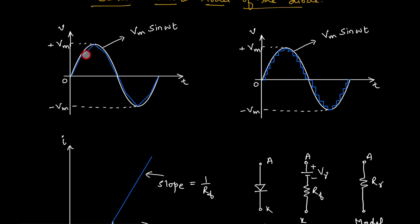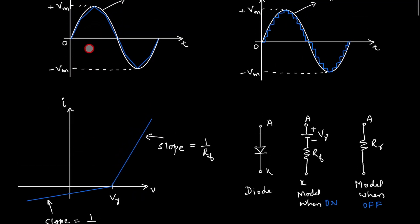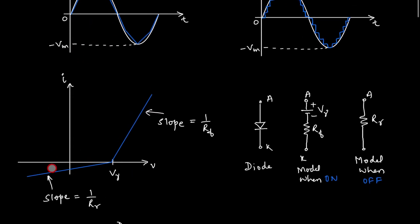Smaller the segments, the closer to the actual waveform. This is what the piecewise linear model is all about. This was for your sinusoidal input, but now we'll apply this technique to the diode, which has its own characteristics.